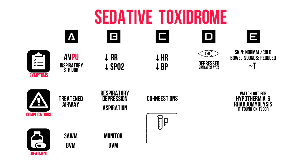We should therefore get the appropriate blood work: an arterial blood gas, liver and renal panel with electrolytes, CK, etc. Don't forget the tox screen. We've also provided respiratory support. Move on to risk assessment — can the patient tell you what they took, when, etc.?